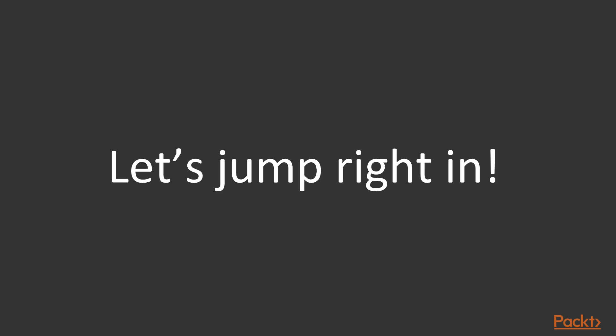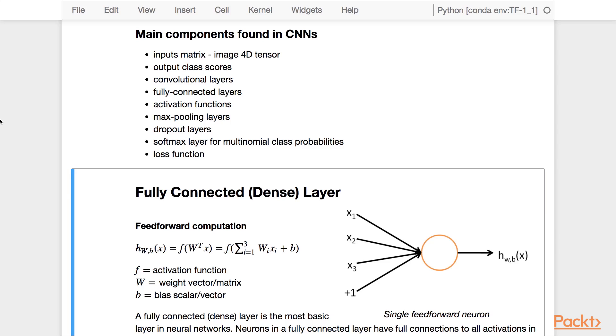Let's now jump right into the notebook. Here are the main components found in CNN. You've got the input matrix, which is the image representation in a 4D tensor. You also have the output class score.